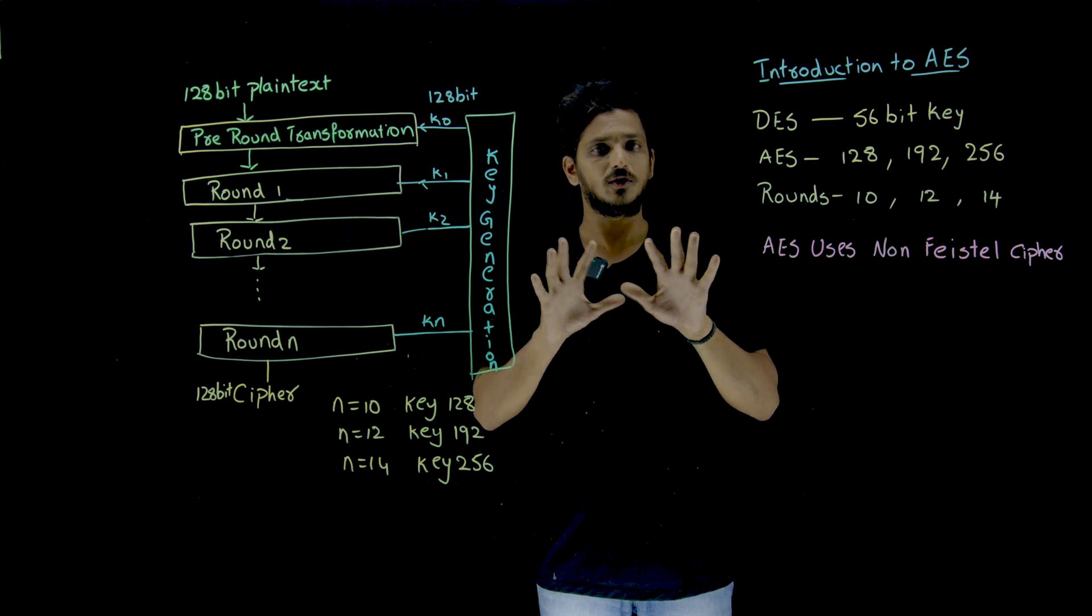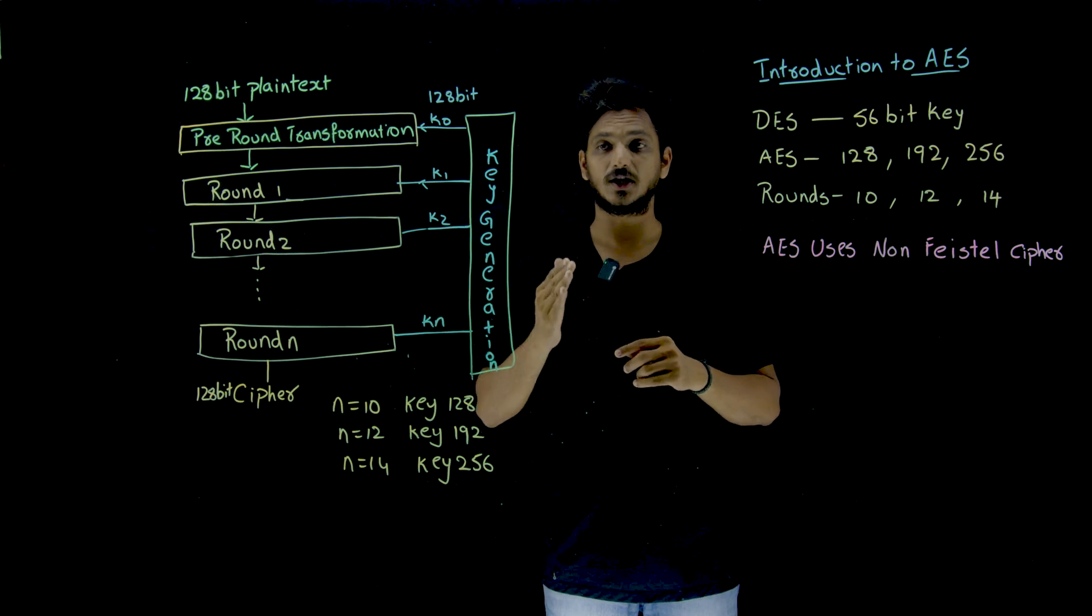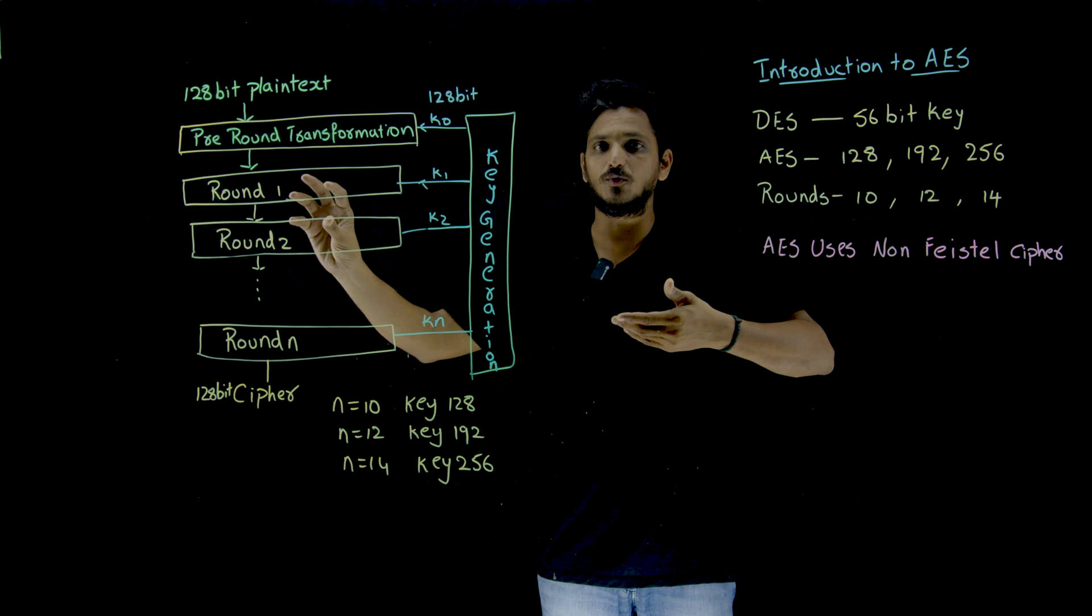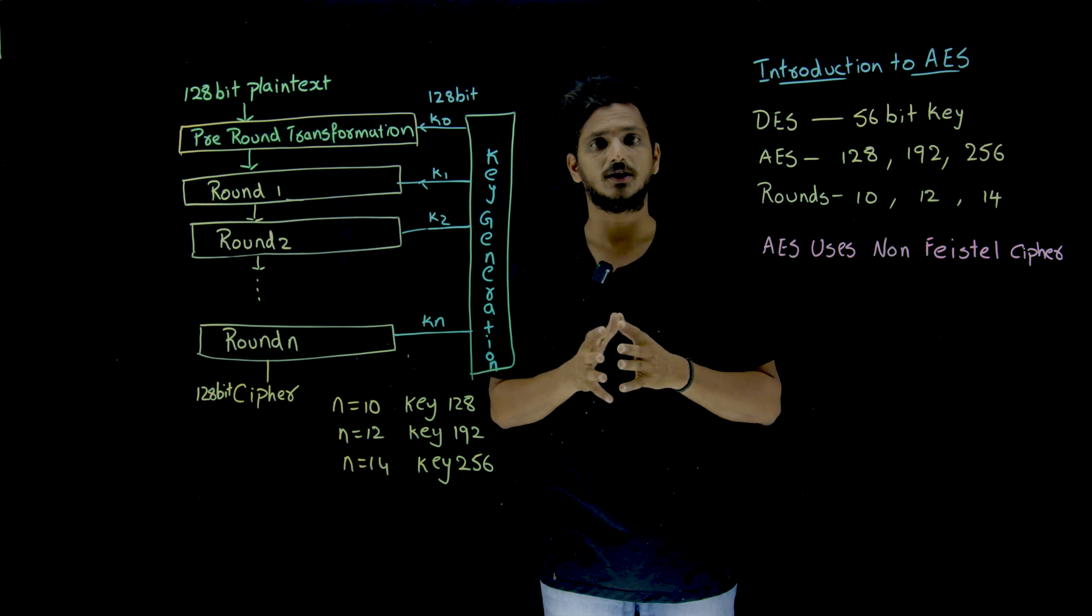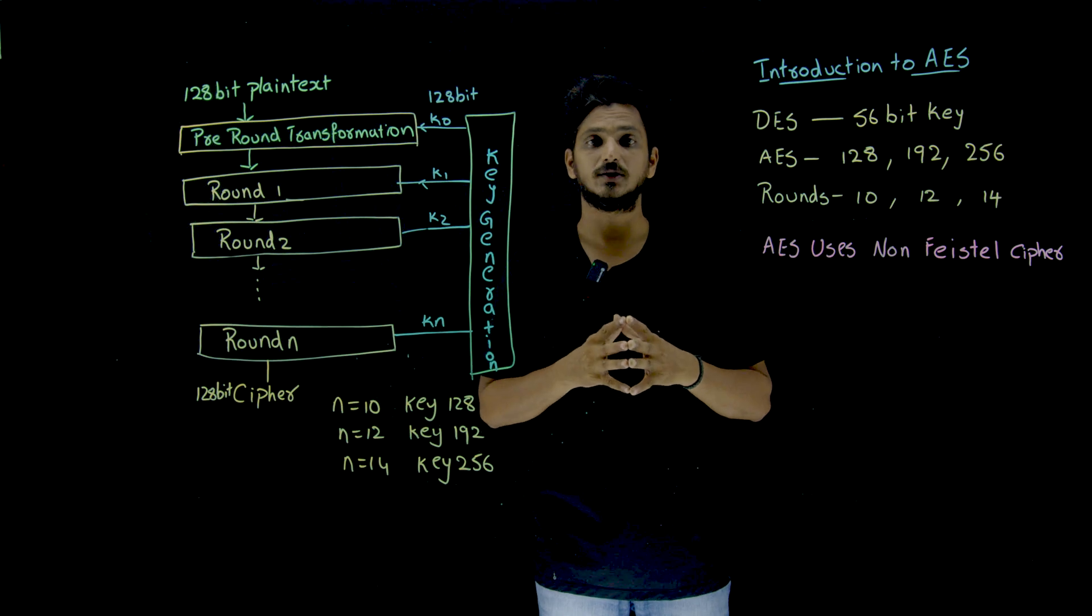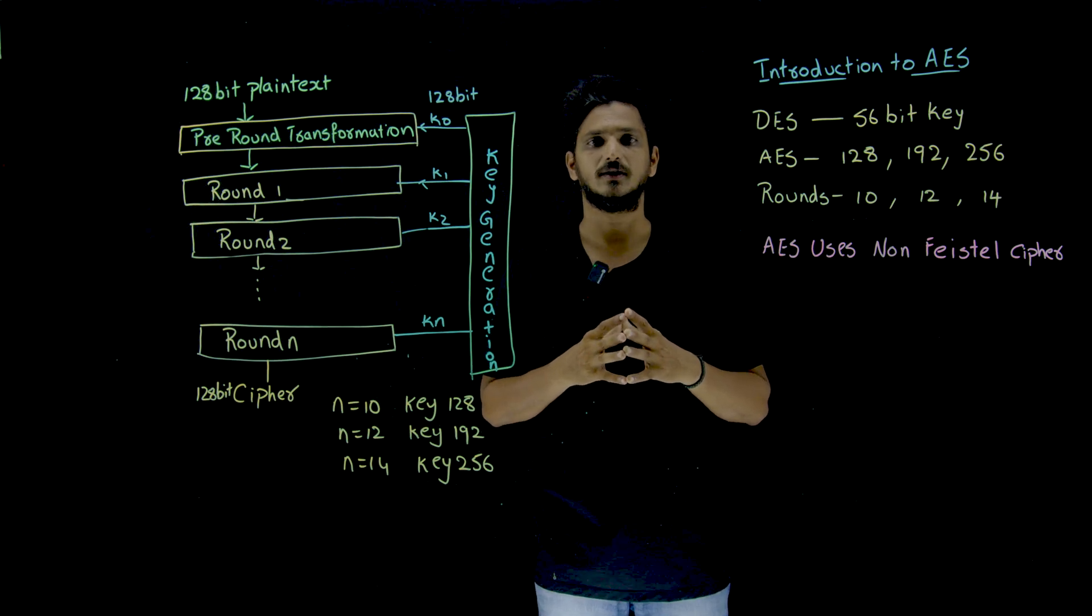So hope you got a good clarity about what happens inside the AES. In our next class, we are going to understand the overview of what happens inside the round in AES. If you have any questions regarding the concept, please post your questions in the comment section below. Thanks for watching. If you have not subscribed to our channel, please subscribe to our channel and press bell icon for the latest updates. Thank you.